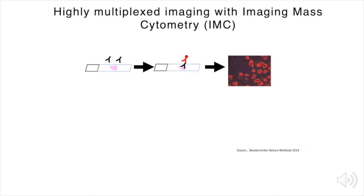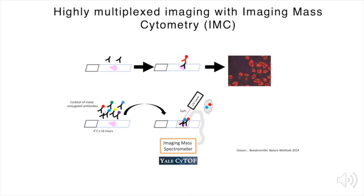In imaging mass cytometry, individual primary antibodies are covalently bonded to rare earth metals and incubated up to 42 at a time on a tissue section. The tissue is then ablated with a laser, with the resulting plume siphoned into a time-of-flight mass spectrometer. This allows us to detect precisely which metals, and therefore which antibodies, were bound to each 1 micron by 1 micron area of tissue.